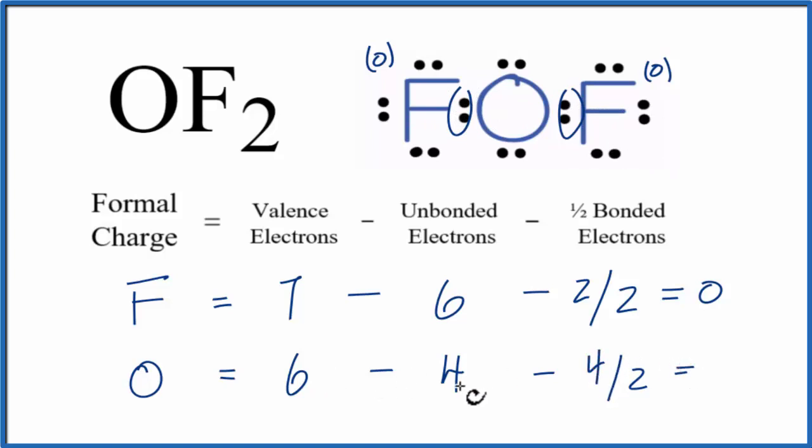So 6 minus 4, that's 2, minus 2, that's 0. So the formal charge on the oxygen in OF2 is 0. Those are the formal charges for oxygen difluoride. They're all 0, which is what we would expect for the most favorable or likely Lewis structure for OF2.